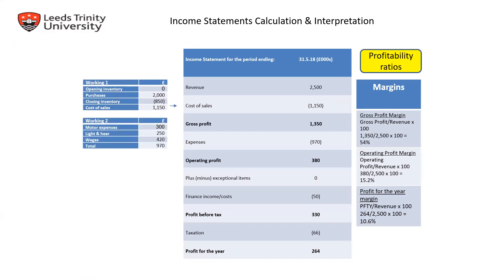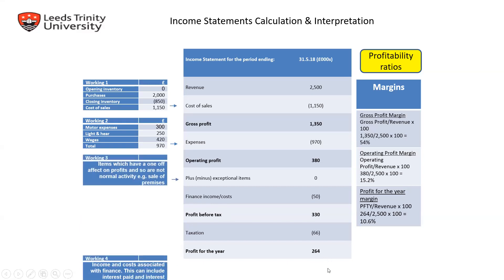Looking at the layout for the income statement: revenue minus cost of sales gives gross profit. After that, deduct all expenses — motor expenses, light and heat, wages — to get a total, which is then reflected to give operating profit. Add or minus exceptional items and other income or costs to get profit before tax, and then after tax we arrive at profit for the year.